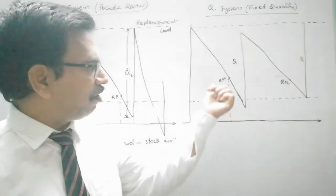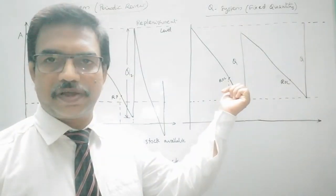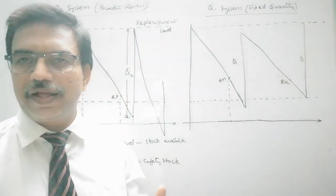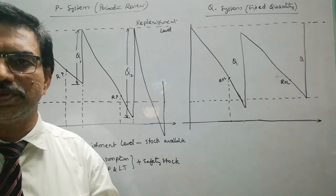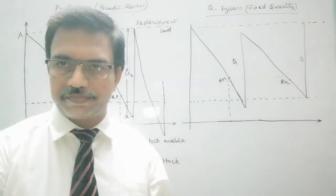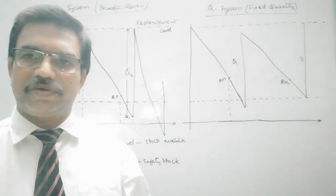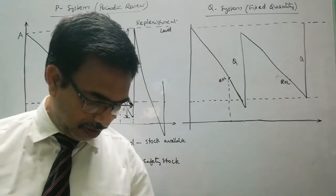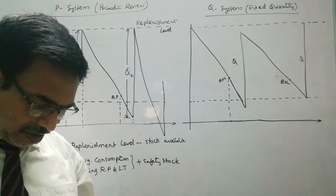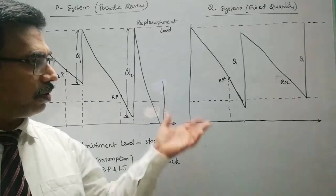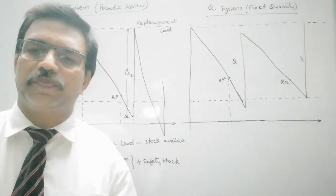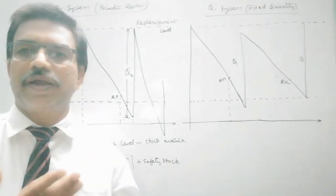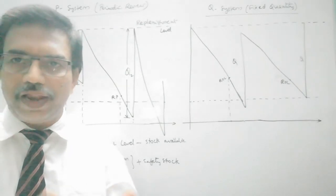Because for every item we fix the reorder levels and as soon as the reorder level is reached we place an order automatically, the cost of operating the system is also less compared to P system. In Q system there is no extensive auditing of items, whereas in P system extensive auditing is required, which is why cost is high there. A disadvantage is that if more items reach the reorder level at the same time and the suppliers for different items are different, some items may be delayed due to delays in the purchasing process.